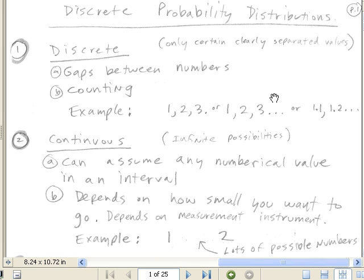This could be like a number of customers coming in the store. We know we can have 1, 2, but we can't have 1.5. But you could also have things like 1.1, 1.2. So you can use decimals with discrete random variables, but there's going to be gaps between the numbers.